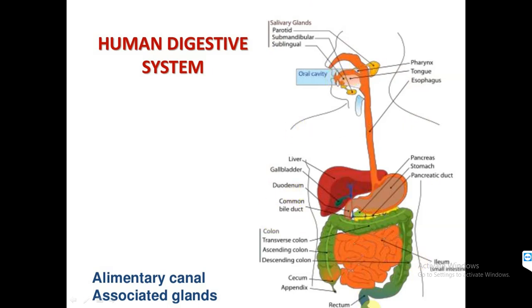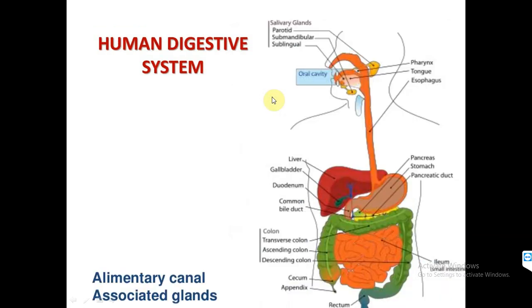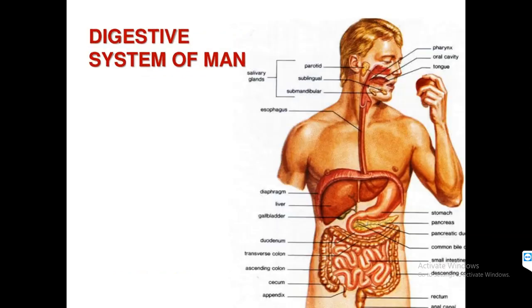The digestive system of man includes further divisions — the glands are further divided in this diagram. In the previous picture only names were given, but here it is clearly shown how the glands are divided into three different types. Also shown is the colon, which is part of the large intestine, divided into ascending, descending, and transverse colon based on the position — descending means going from up to down, ascending from lower to higher level, and transverse is at the side position.